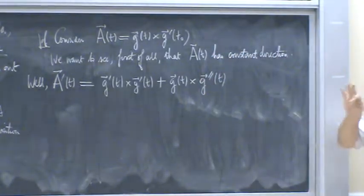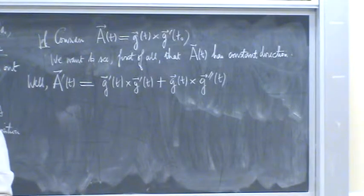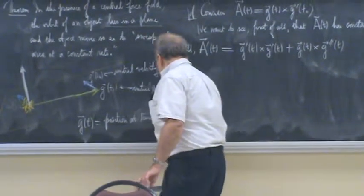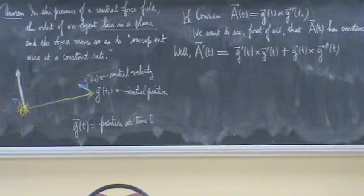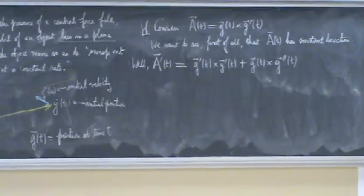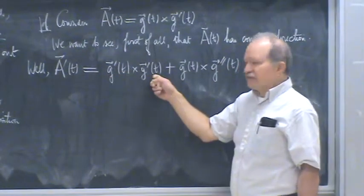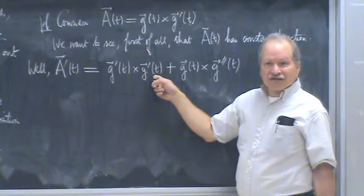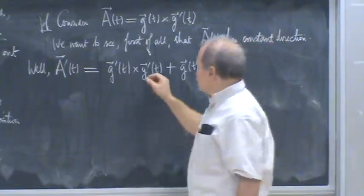So just take the product rule: derivative of the first cross the second, plus first cross derivative of the second. Remember G of t here is the orbit — G of t is the position at time t, and t is the scalar time. What's this first term? It's G prime cross G prime — the cross product of a vector with itself is zero. So this term is zero.